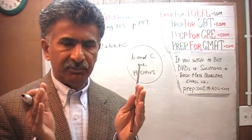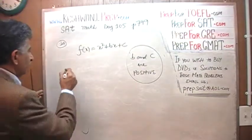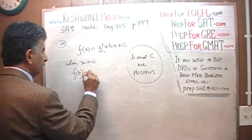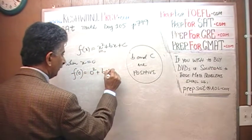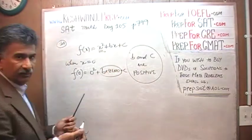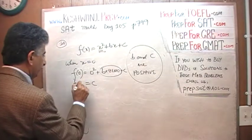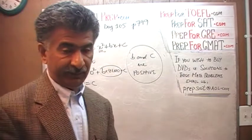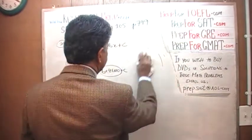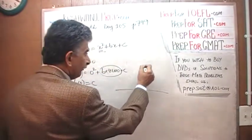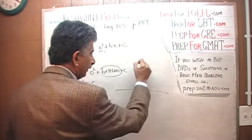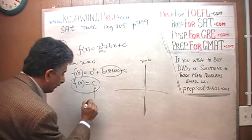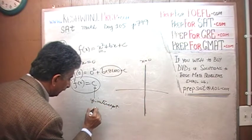When x equals zero, f of zero would simply be zero squared plus b times zero plus c. B times zero is zero, so it's just c. F of zero is c. In other words, the value of the function is c when x equals zero. Where does x equal zero? Along the y-axis. Which means the y-intercept equals c.